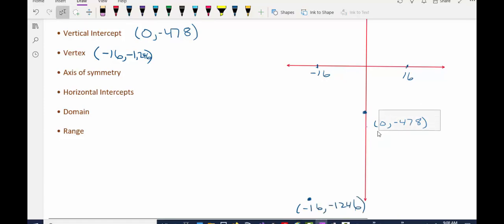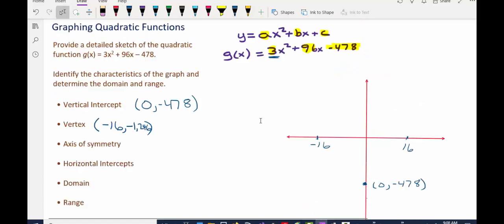Which makes sense to me if I was to move this point up a little higher. Now to get a rough sketch, I noticed that the a value in the original problem was positive. In fact, remember, a was a positive 3 here. What this tells me is that the parabola is going to open up and look like the letter u.